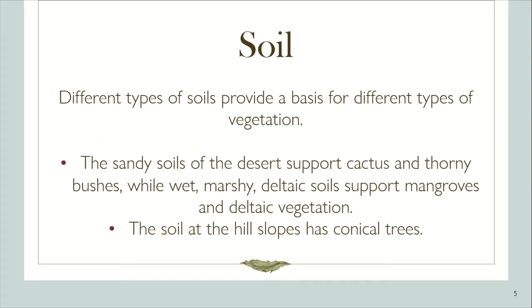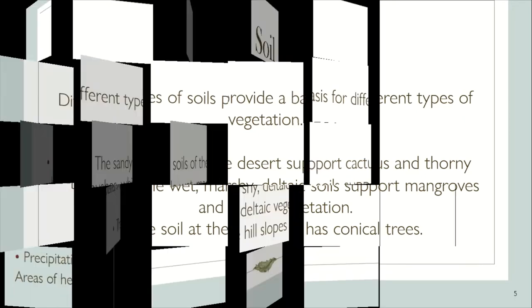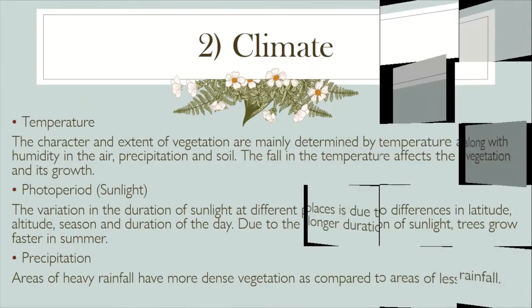Second is soil. Different types of soil provide a basis for different types of vegetation. The sandy soils of the desert support cactus and thorny bushes. Waterlogged deltaic soil supports mangroves and deltaic vegetation. The soil at the hill slopes supports conical trees.